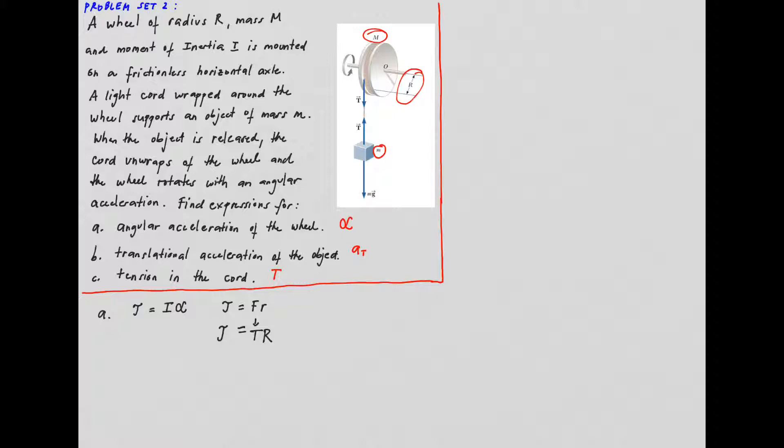And then, we could represent now, we have here tension multiplied by the radius equals the moment of inertia multiplied by the angular acceleration.